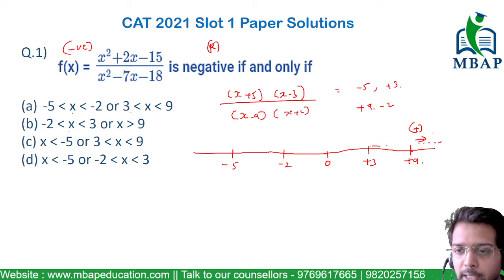If you choose anything between 3 to 9, let's say if you put 4, obviously the numerator will become positive but the numerator will be 4 - 9 which is -5, so this will be negative.